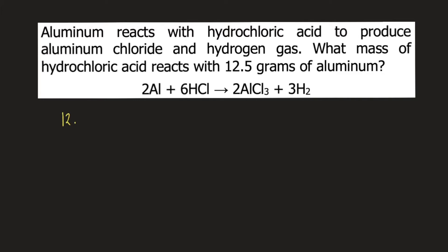We start with what is given to us: 12.5 grams of aluminum. First, you need to convert this into moles of aluminum, then convert this to moles of hydrochloric acid, and finally convert this into grams of HCl.